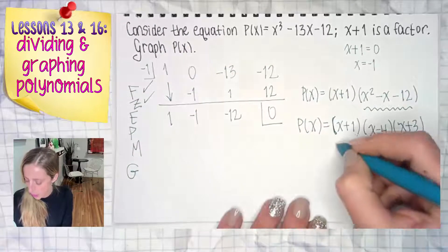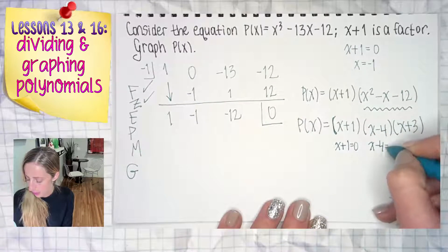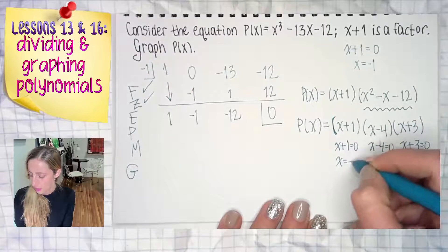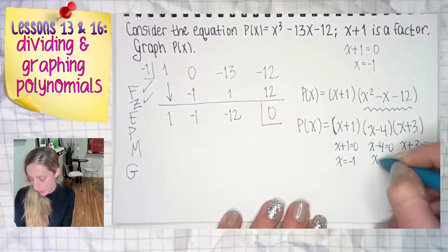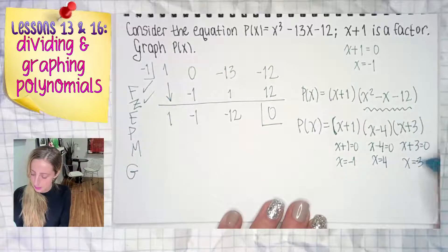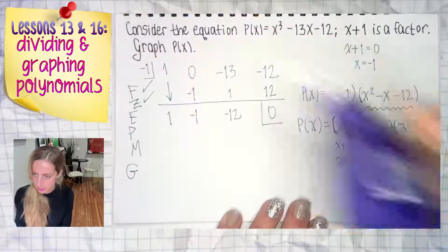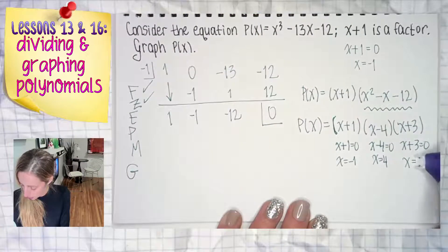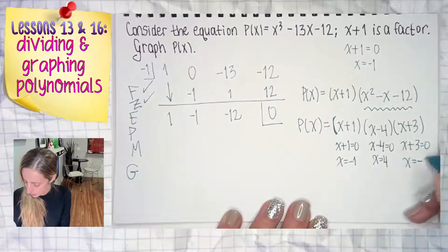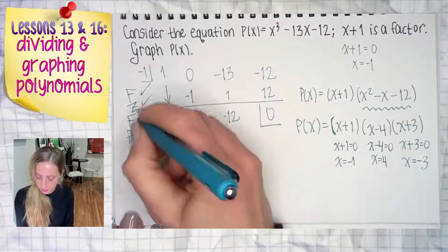Zeros with the zero product property. You're next. Set each inner factor equal to zero. X equals negative one. X equals four. And x is negative three. Sorry. Sorry about that. I don't like how that looks. Let's fix it. It's a little squished. Make it very obvious. Negative three. There we go. All right. Got them.